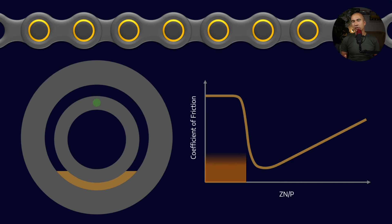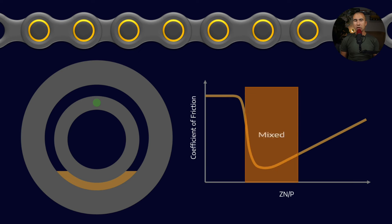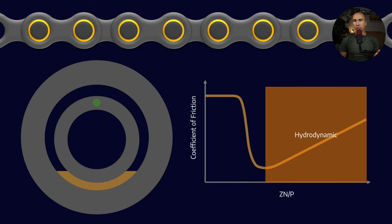Now, the catch is that in a system like this, we don't quite have the same mechanics at hand. Because if you remember from our Strybeck curve, where coefficient of friction is on the y-axis, and this term ZN/P, which is a combination of viscosity, speed, and load, is on the x-axis, then what we say is that we move through initially boundary lubrication to mixed lubrication to hydrodynamic lubrication.